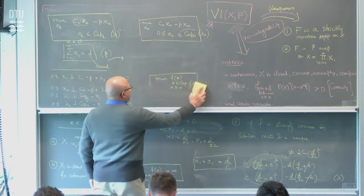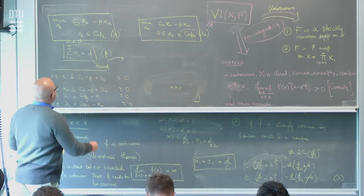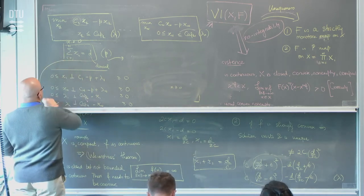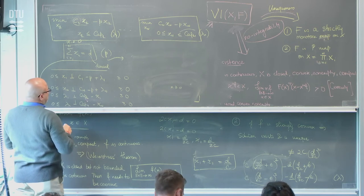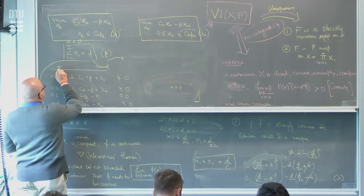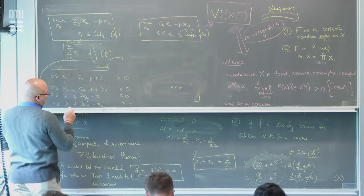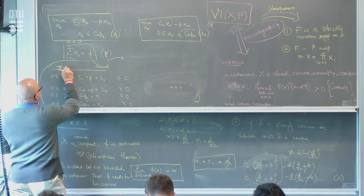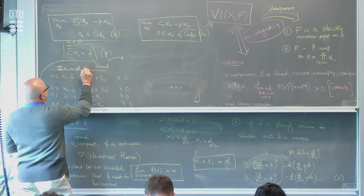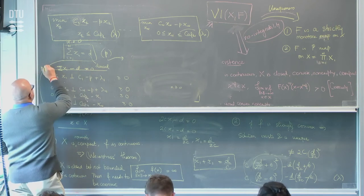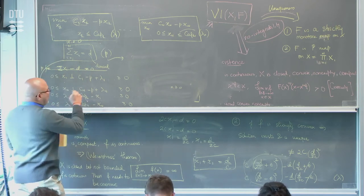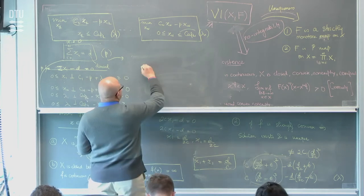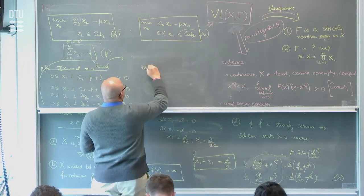So now that we're here, we have one more constraint, which is this one. We have: summation of xi minus D equals 0, and p is free. What you notice is that these are exactly the optimality conditions of a single optimization problem.